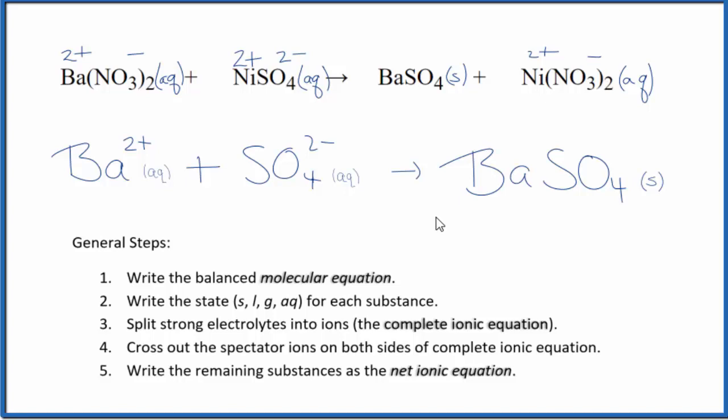So this is the balanced net ionic equation for barium nitrate plus nickel sulfate. Charges conserved, we have a 2+, and a 2-, they balance out, net charge of 0. This is neutral, so the net charge is 0 as well. If you count the atoms up, they're balanced too.